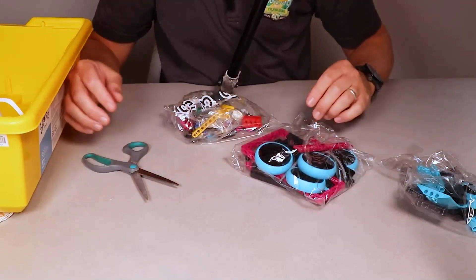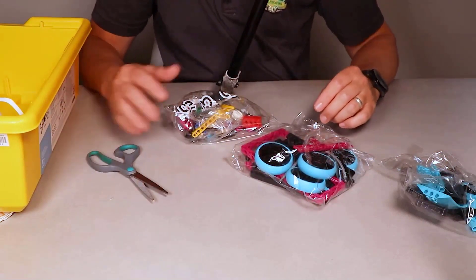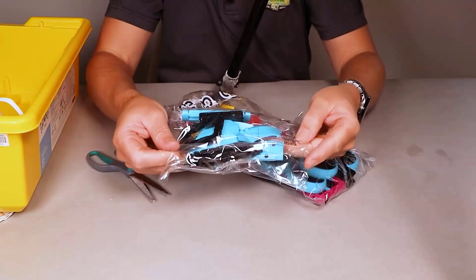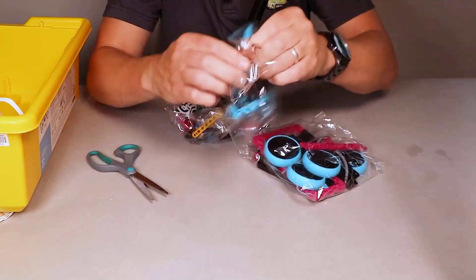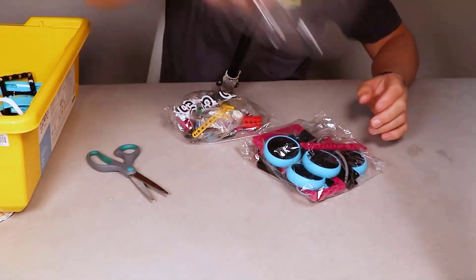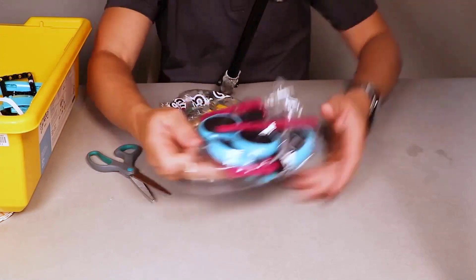A couple more things are going to go into the bottom of this yellow bin. That is going to be our bigger pieces. These pieces are great for decorating your robots, but you can dump that whole bag into your yellow tub.